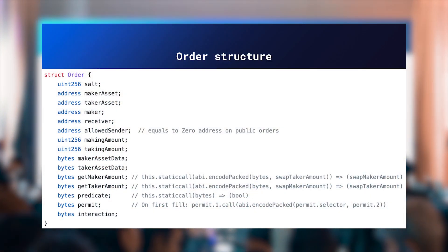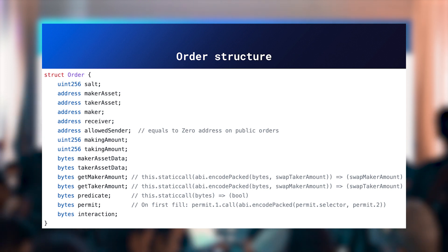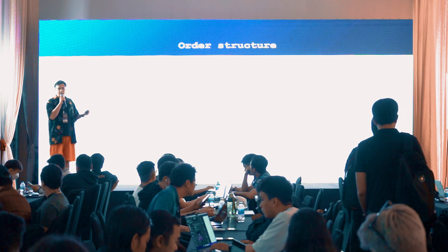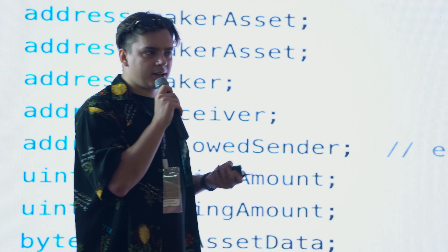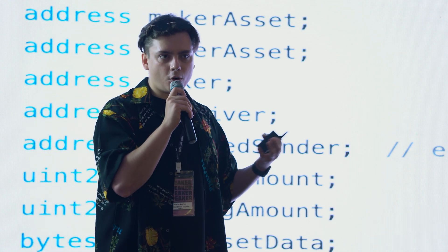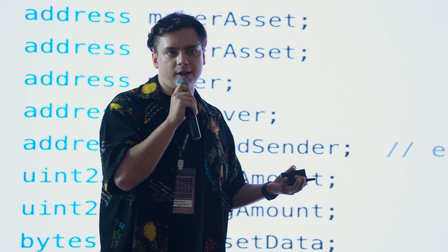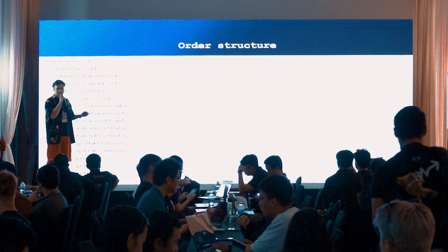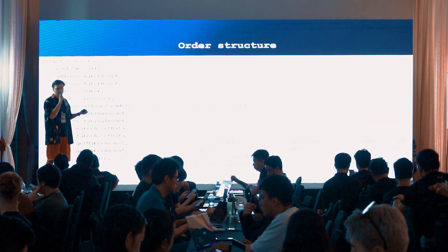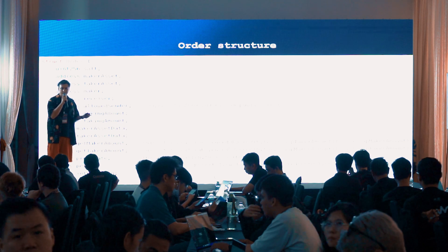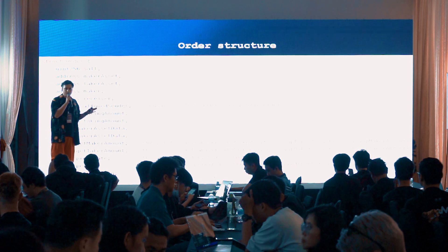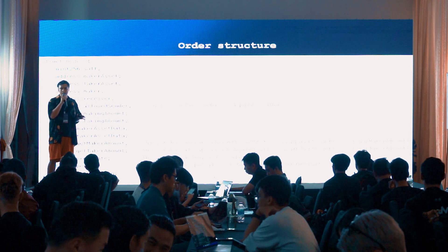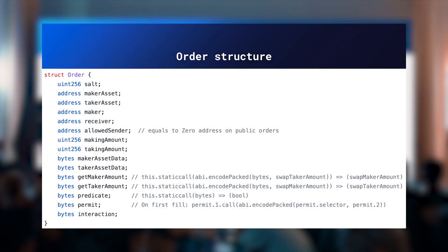Let's talk about the limit order structure and how it looks. There are two options. The first, easy one, is using the API with JavaScript — if you just need to create or fill limit orders, you can use the JavaScript utils library, which is open and available on the documentation site. The second option is you can adjust limit orders to build something more on top — for example, you can build an NFT marketplace based on limit orders. Limit orders allow you to trade any asset, not only ERC20 assets, but actually any asset, even NFTs or any asset with a specific interface implemented. It's also open source, so you can fork it or do anything you want with it.